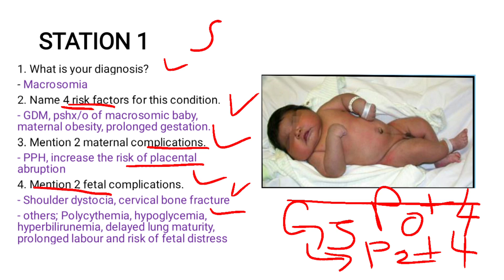The other question is: what are the differentials for any macrosomic baby — what conditions do you associate with a macrosomic baby beyond gestational diabetes or infant of a diabetic mother? And how can you prevent the fifth child from dying at night? Thank you for watching. Please subscribe and view other case studies. See you in the next tutorial.